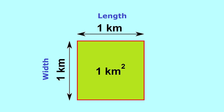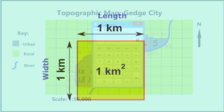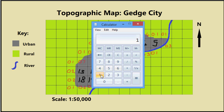Calculate the area in square kilometers of each grid square by simply multiplying the length by the width of the square. If the area of each square was one square kilometer, multiply this figure by the total number of squares: 1 times 28.1 equals 28.1 square kilometers. If each square were two square kilometers, you would say 2 times 28.1 equals 56.2 square kilometers.